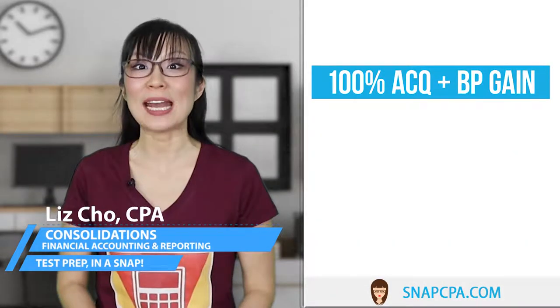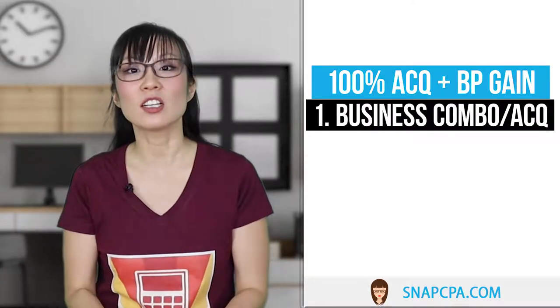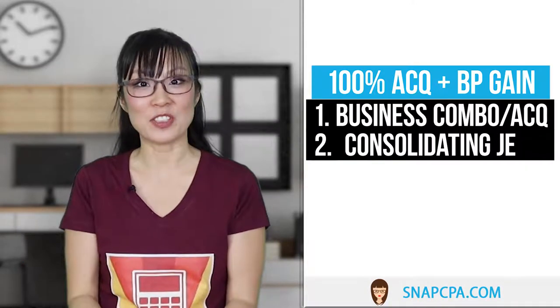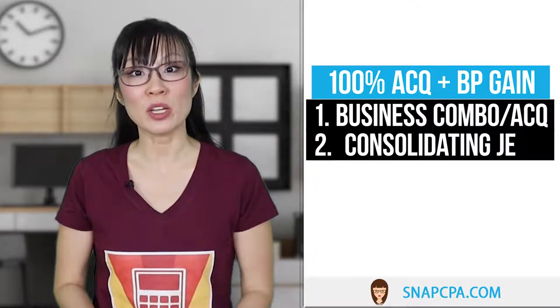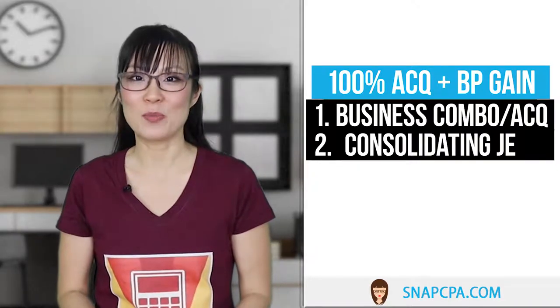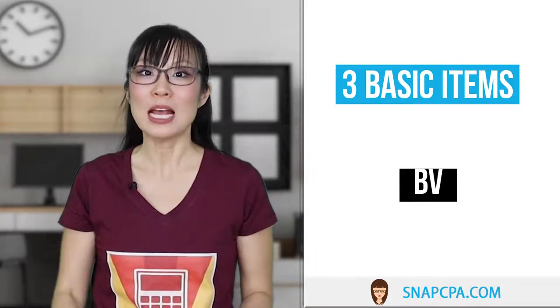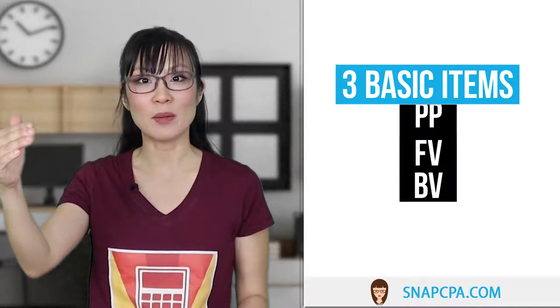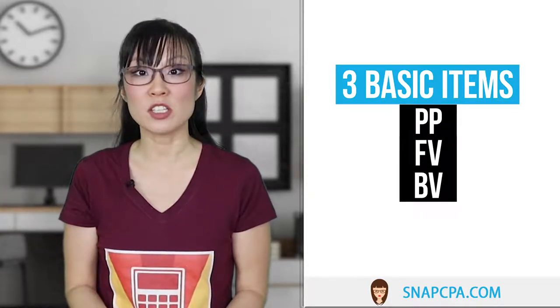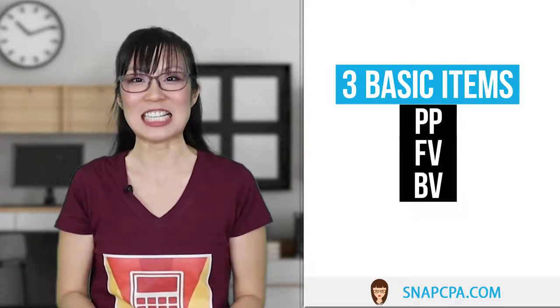In this lesson, we're going to review the acquisition transaction in a business combination and the consolidating entry immediately after. The parent will purchase 100% of the subsidiary and we will have a bargain purchase gain. We'll break down the acquisition entry into three basic items: first, the sub's book value; second, the sub's fair value; and third, the purchase price paid. If you consistently start acquisitions with these three items every time, the rest of the calculations are easy.